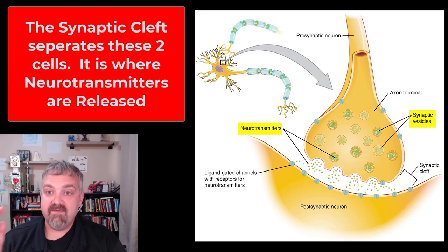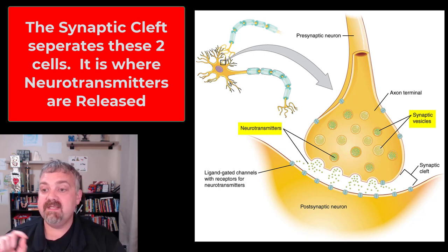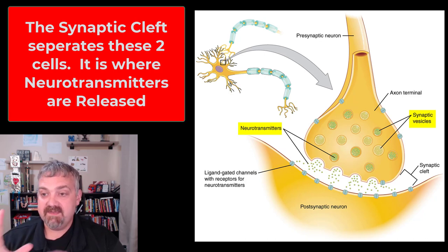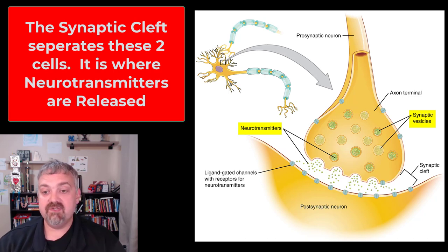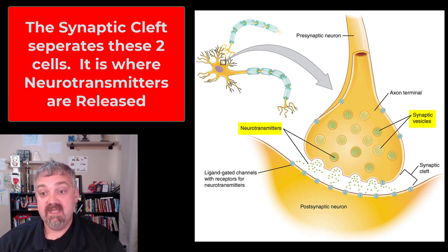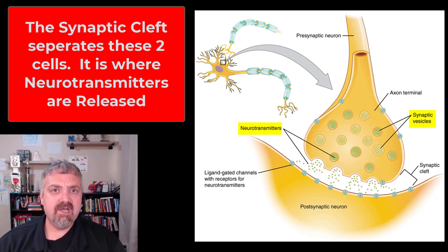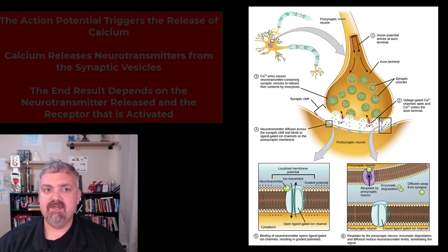So we covered the basic terminology: the presynaptic neuron, the postsynaptic cell, the synaptic cleft, and the synaptic knob with its synaptic vesicles. A neurotransmitter is a chemical messenger that crosses a synapse. If the same chemical is in your bloodstream, it would be called a hormone — but here they are called neurotransmitters.